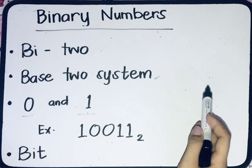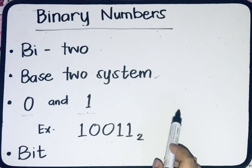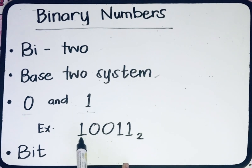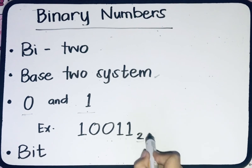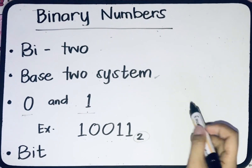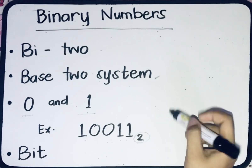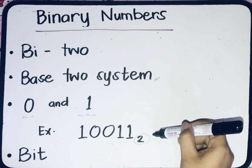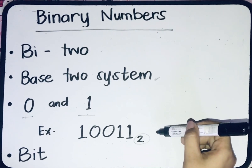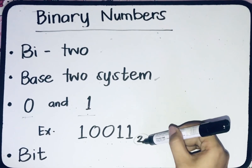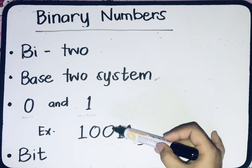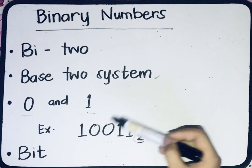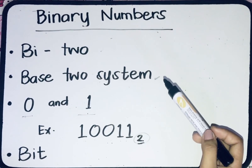Let's have this example. So this is a binary number, read as 10011, and as you can see, we have a subscript 2 here to indicate that this number is a binary number. Because if we don't put a subscript 2, we might be confused — is it 10011, or is it a decimal number?